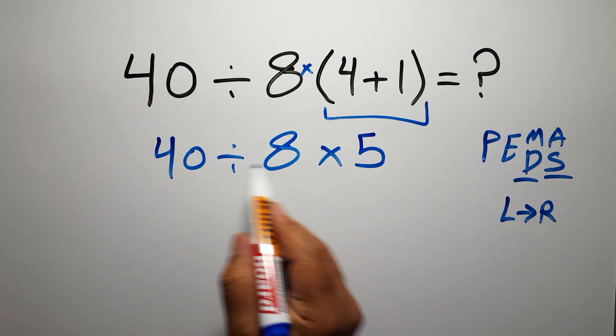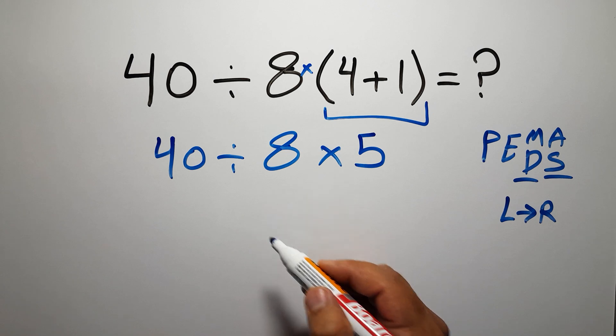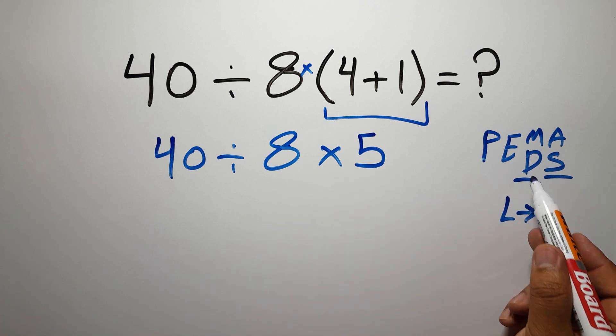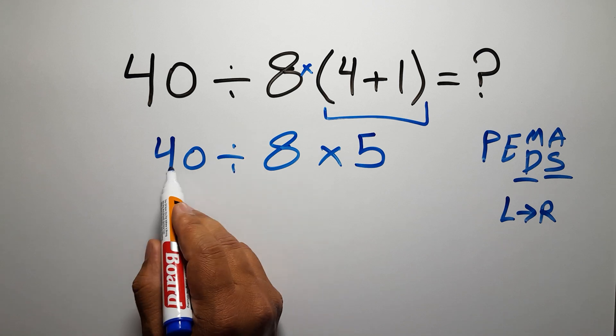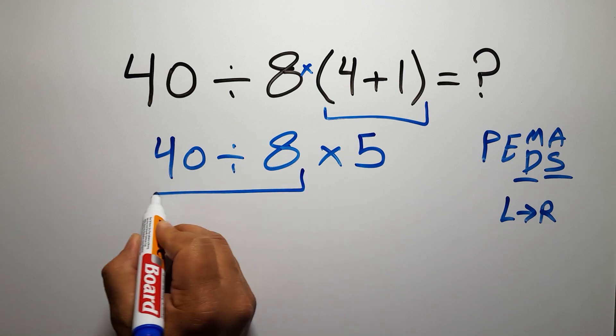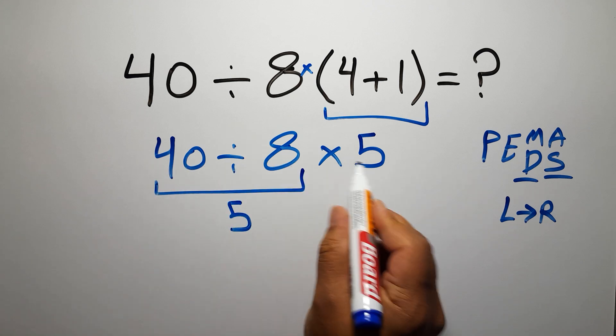Now we have one division and one multiplication. As I said, multiplication and division have equal priority and we have to work from left to right. So first, this division: 40 divided by 8 is just 5.